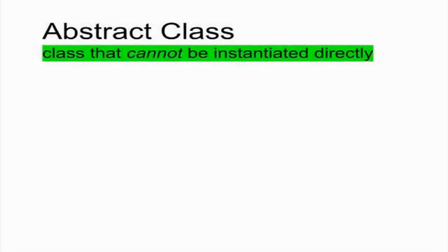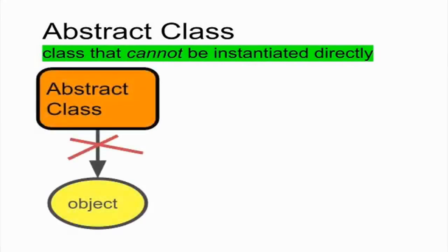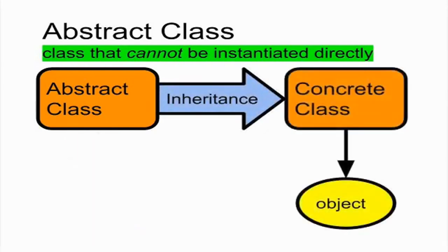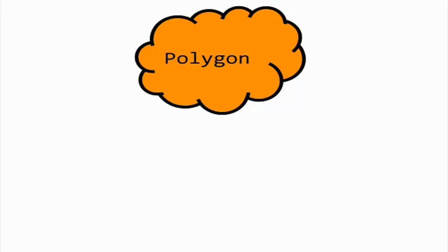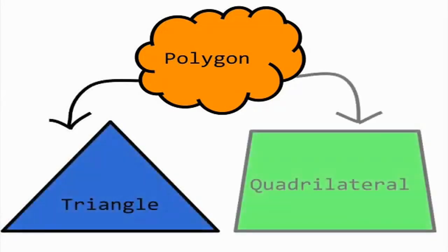An abstract class is a class that cannot be instantiated as itself. Instead, it serves as a base class from which more concrete classes inherit their attributes and behaviors. In our example, polygon is an abstract class — therefore we cannot create polygon objects. What we can do is create objects of its derived classes: triangle and quadrilateral.